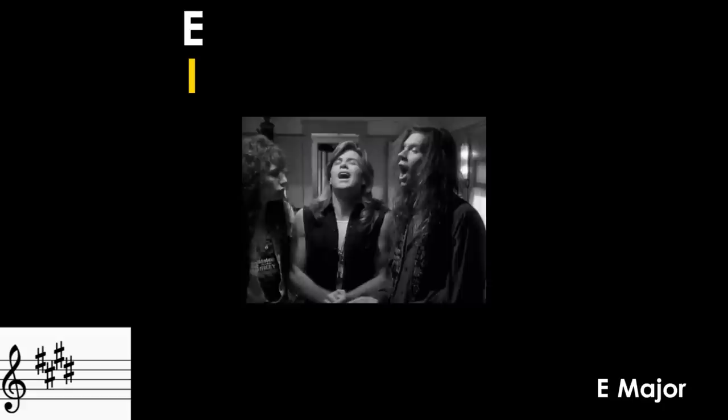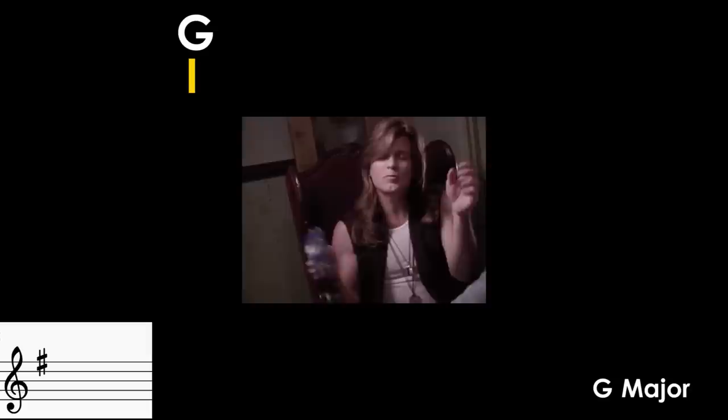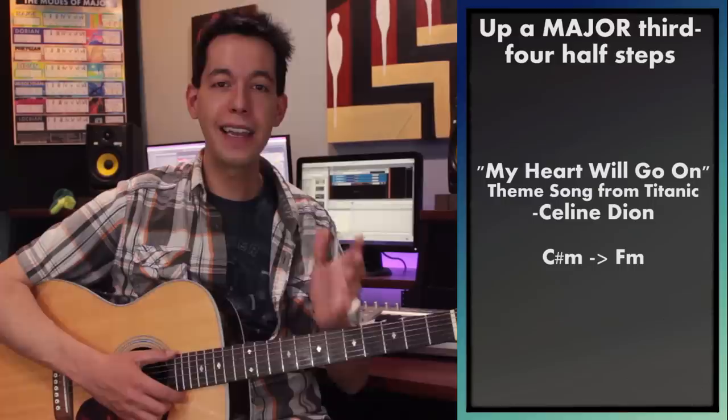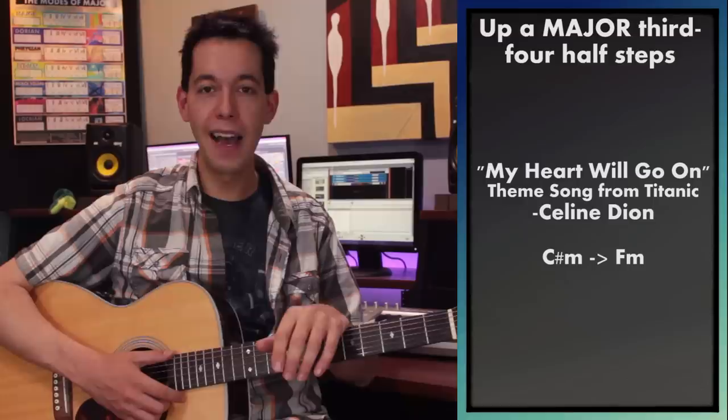We could keep going — minor thirds, major thirds. 'I'm the One Who Wants to Be with You' is in E major, but at the end they spice things up by bringing it all the way up a minor third to G major. And maybe the most dramatic and epic modulation I can think of in modern history is from Celine Dion's 'My Heart Will Go On.' Those choruses are in C# minor.